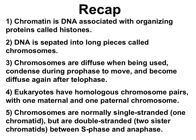Let's recap. For DNA to be organized, DNA is associated with organizing proteins called histones. Together, DNA and histones are called chromatin. DNA is separated into really big chunks called chromosomes, each with a bunch of genes. Chromosomes are diffuse when being used, condense during prophase to move, and become diffuse again after telophase. Eukaryotic cells have homologous chromosome pairs with one maternal and one paternal chromosome. Chromosomes are normally single-stranded with one chromatid, but become double-stranded with two chromatids during S phase, and remain double-stranded until anaphase when sister chromatids separate.